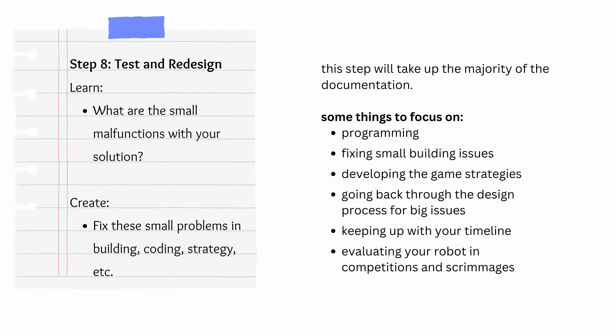The second to last step is test and redesign. This is looking through your robot, testing the robot, and fixing all of the small malfunctions, as well as doing all of your programming, game strategy, and timeline evaluation. Also, make sure that you're writing down all of the stuff in competitions and scrimmages so you can fix all of the small problems that come up. This is probably going to take the majority of your documentation, because this step is where you would go back through the design process.